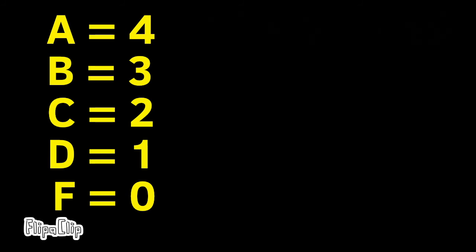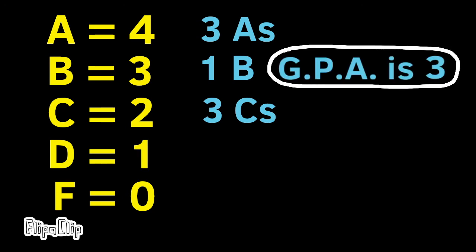For this next one, let's say you earn 3 A's, 3 C's, and 1 B. The 3 A's and the 3 C's balance each other out. Since a B is exactly between an A and a C, the grade point average would be 3.0. The same could be said if you had 2 B's, along with the 3 A's and 3 C's. The grade point average would also be 3.0.